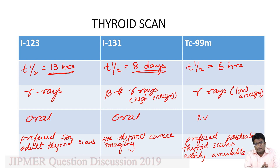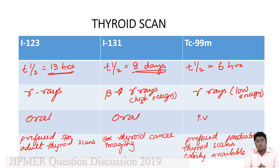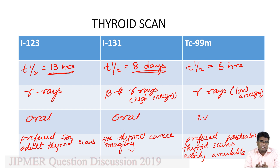To summarize: thyroid scans can be done using iodine 123, iodine 131, or technetium 99m. Iodine 123 is the preferred agent for adult thyroid scanning. Iodine 131, because of its beta and high-energy gamma ray emissions, is mainly used for evaluating thyroid cancers. Technetium 99m, producing low energy gamma rays, is preferred in pediatric thyroid scanning and in settings where iodine 123 is not easily available.